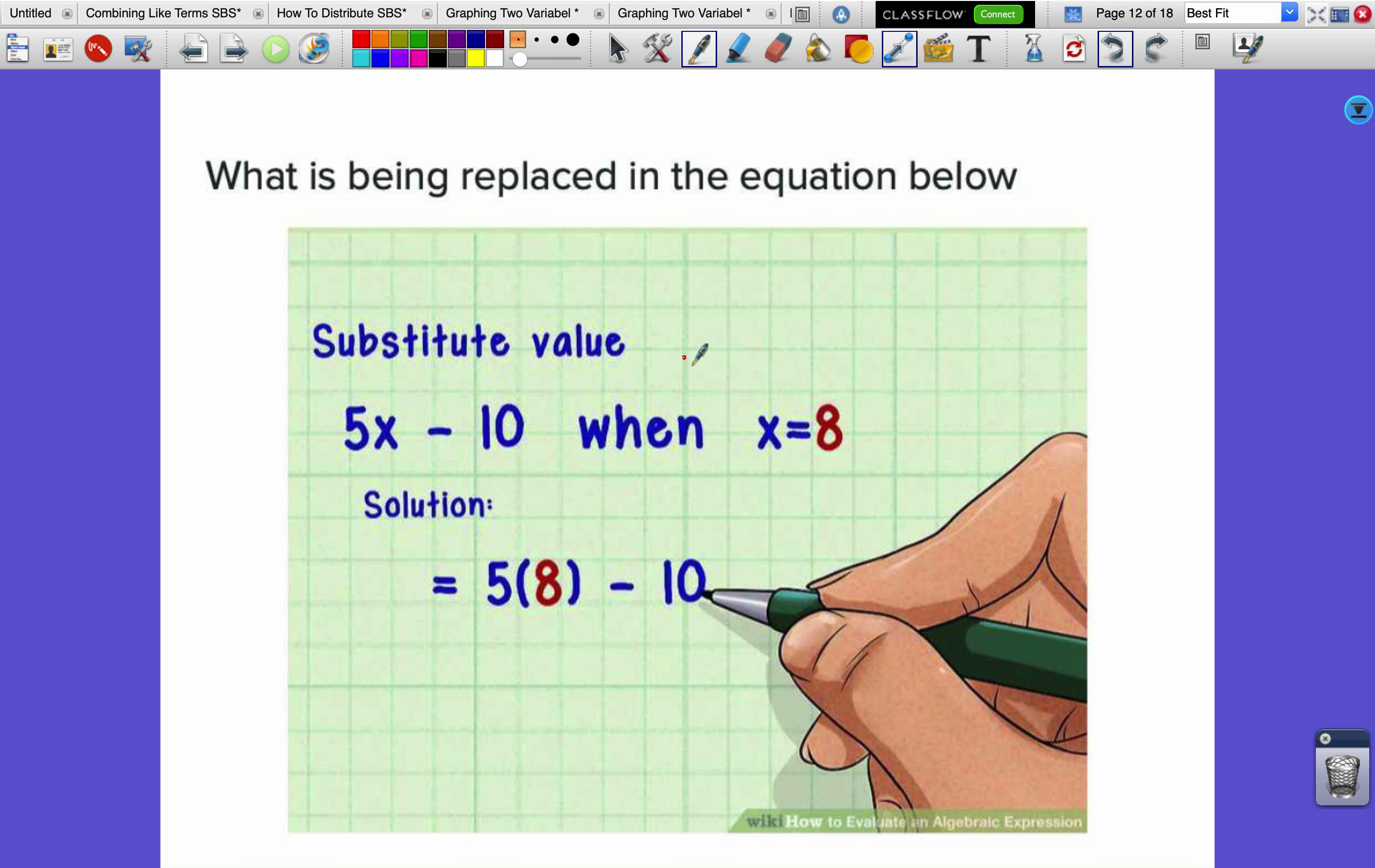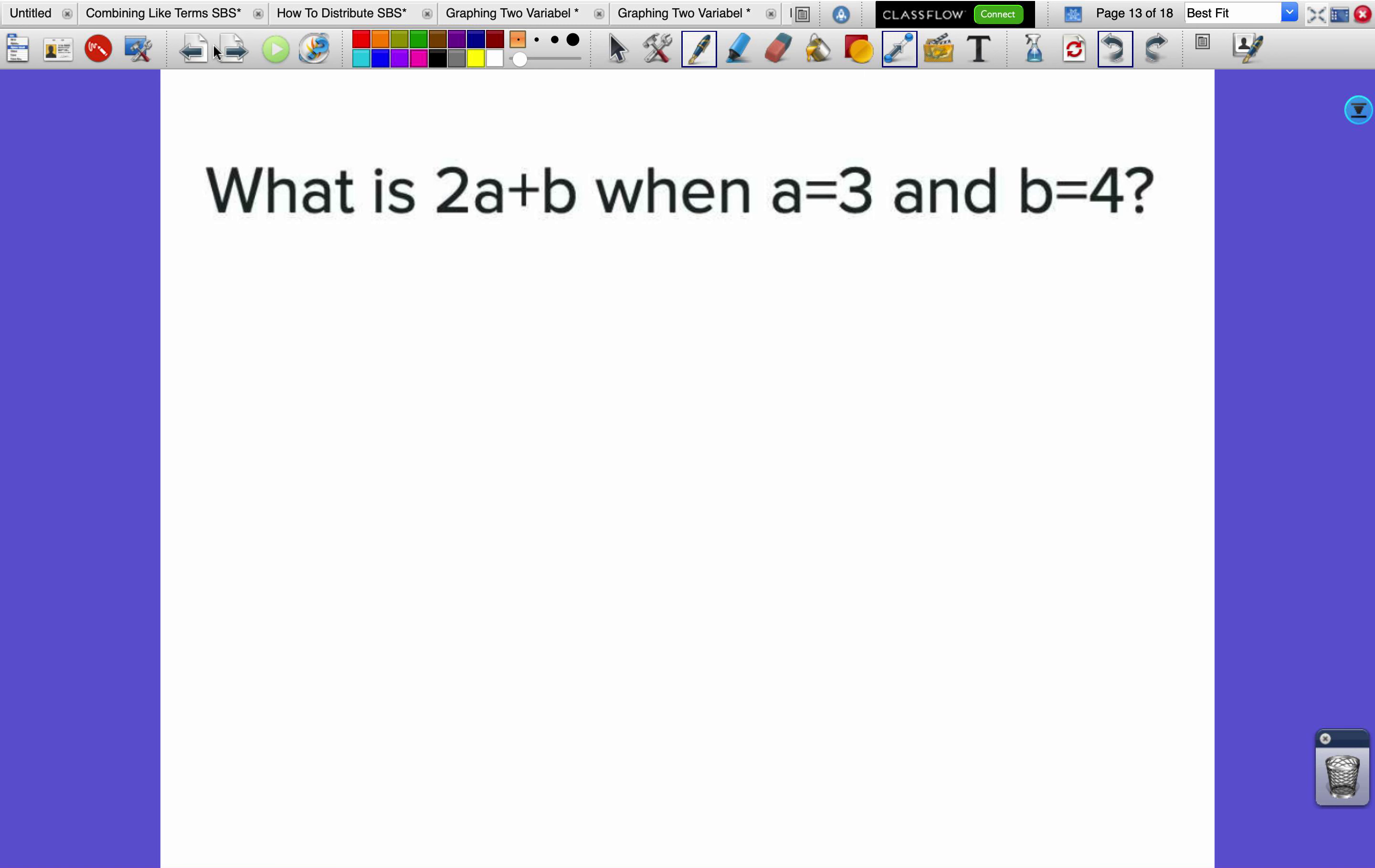When it happens mathematically, a variable comes out and a number goes in. We've got the expression 5x - 10 when x = 8. The x comes out and the 8 goes in. Notice in this picture here, they're using parentheses to do the substitution. I'm encouraging you to use parentheses every time you do substitution to make sure we do exponents and negatives correctly.